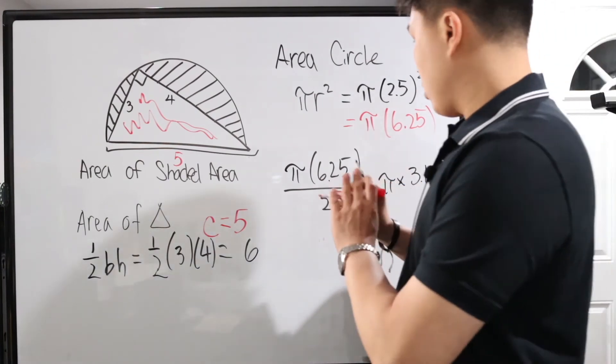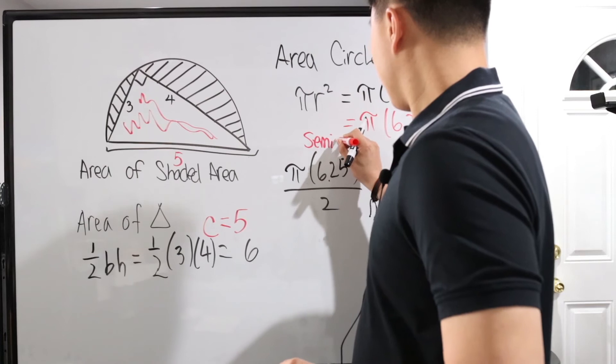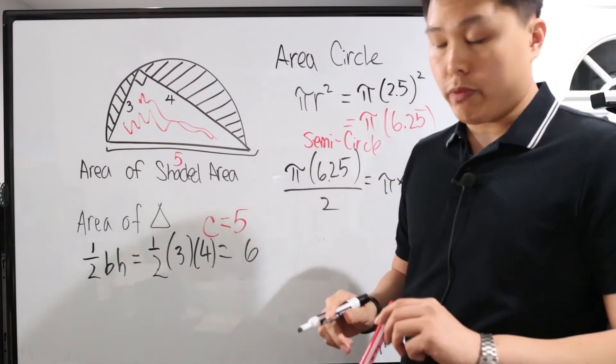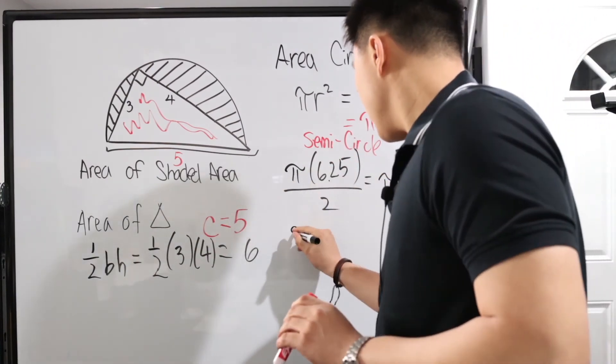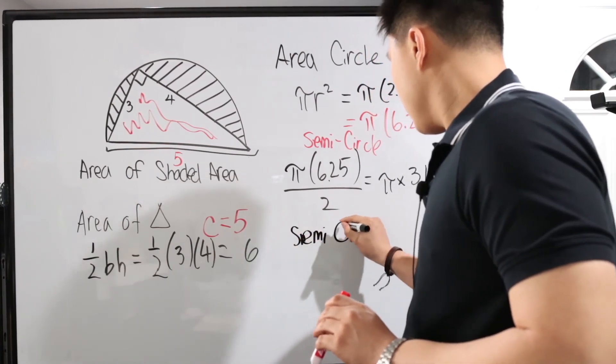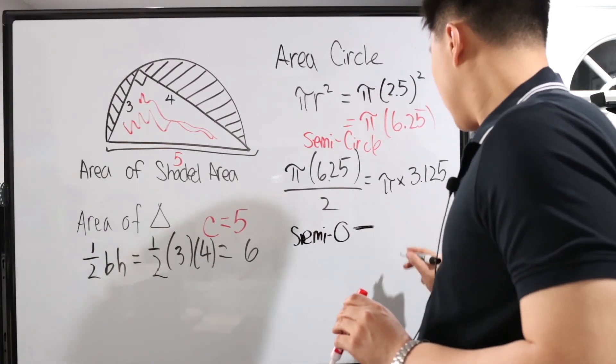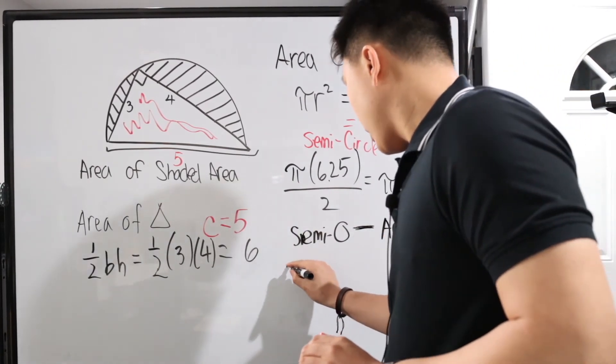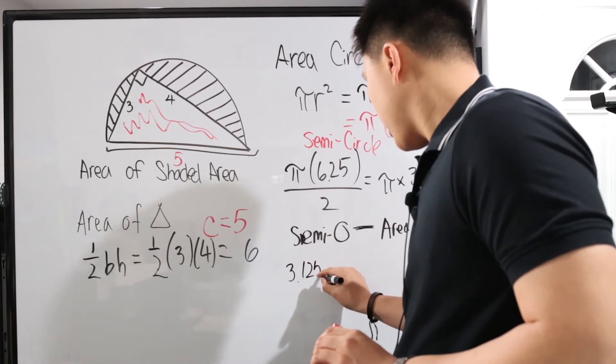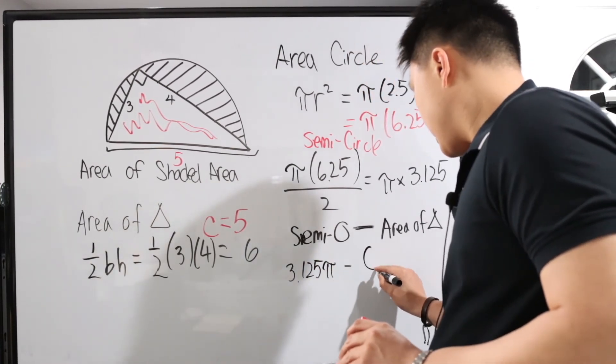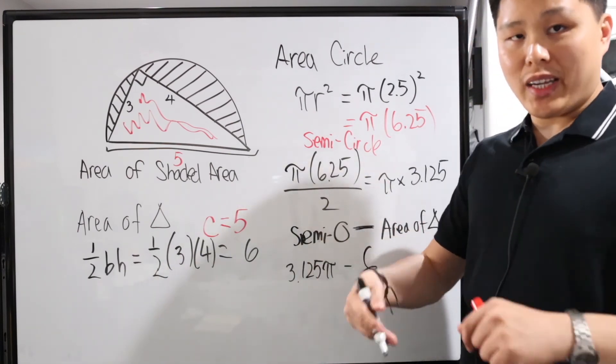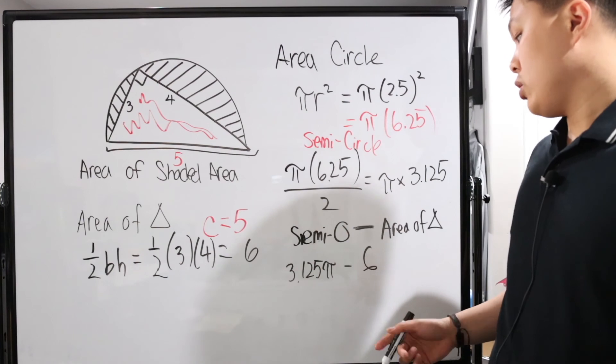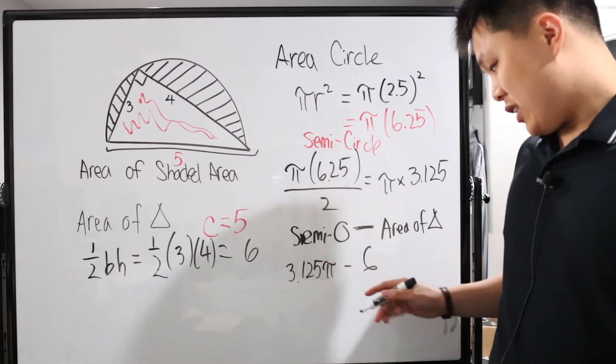This is the area of the semicircle now. This is the area of the triangle. So what we're going to do is we're going to have the area of the semicircle subtract the area of the triangle. So basically you have 3.125 pi subtract six. Now at this point, unless they have a calculator or you're allowed to use a calculator, then you can plug this in and then give a rough estimate of the number and the decimals. If not, this is basically your answer. This is as simple as it can get. And if you see this on a multiple choice, that is one you would choose.